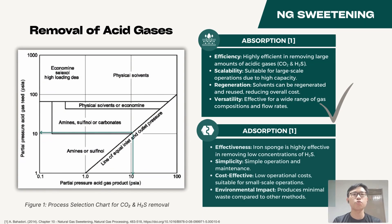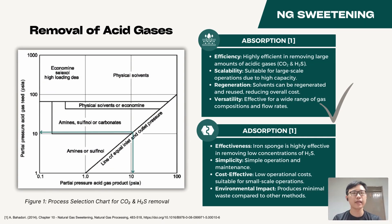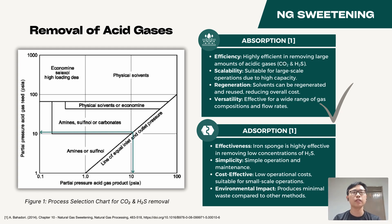Firstly, let's discuss the sweetening of natural gas. Several techniques of removing carbon dioxide and hydrogen sulfide practiced in industry include chemical absorption using liquid solvent and physical absorption using iron sponge. Based on the composition and partial pressure of acid gases in the raw natural gas,